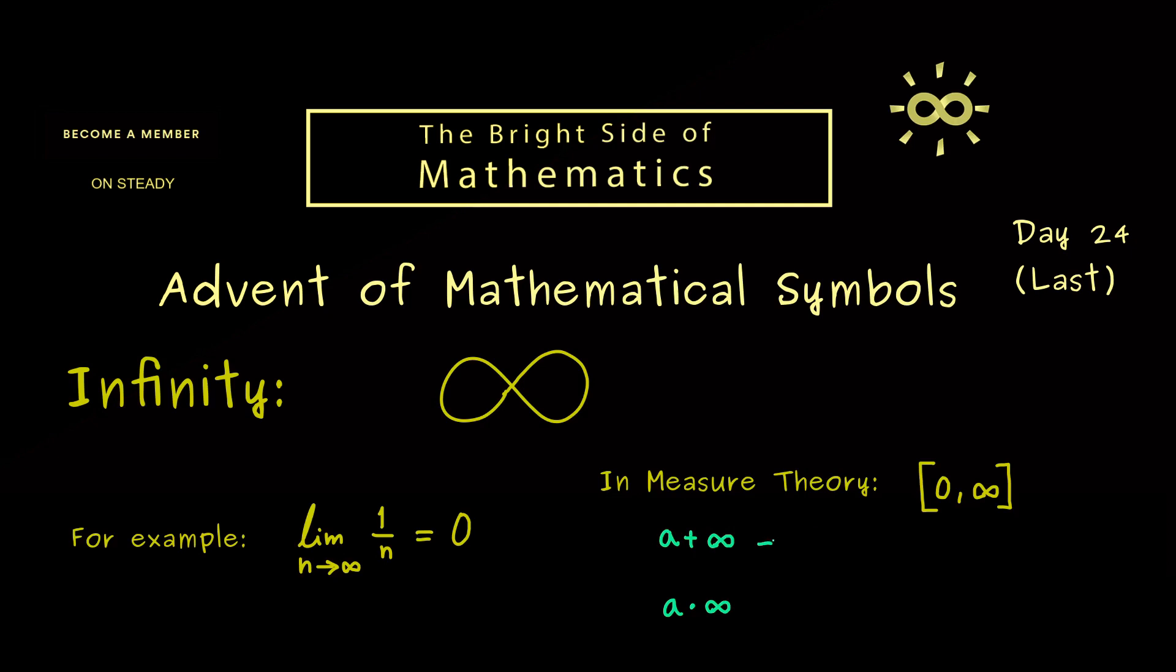So a plus infinity should of course be the same as infinity plus a. And now because we see infinity as the largest number in our interval this should be infinity again. Indeed this should also hold when a was infinity at the beginning. Or to put it in other words infinity plus infinity should be infinity again.